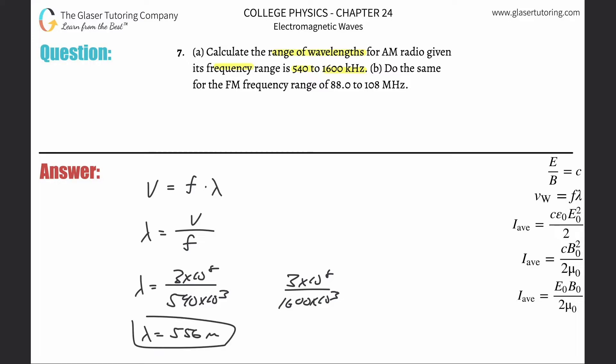And then the other one is going to be three times 10 to the eight divided by 1600 times 10 to the third, and this is now about 188 meters. So lambda is equal to 188 meters.